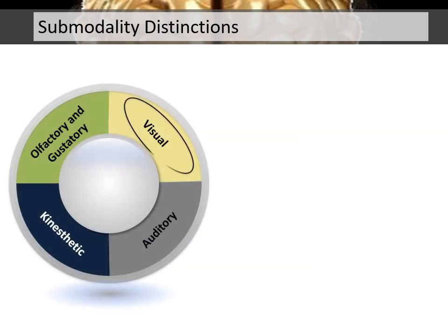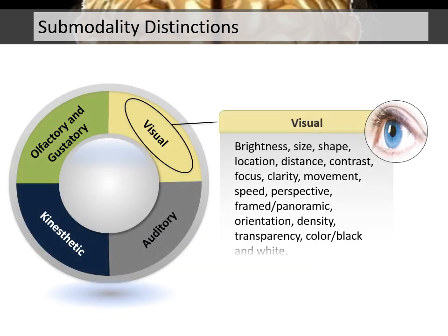Visual submodalities include: brightness, size, shape, location, distance, contrast, focus, clarity, movement, speed, perspective, framed or panoramic, orientation, density, transparency, color, and black and white.